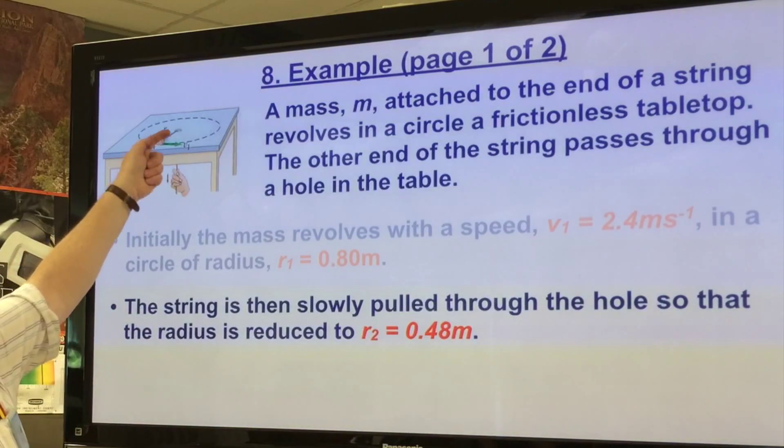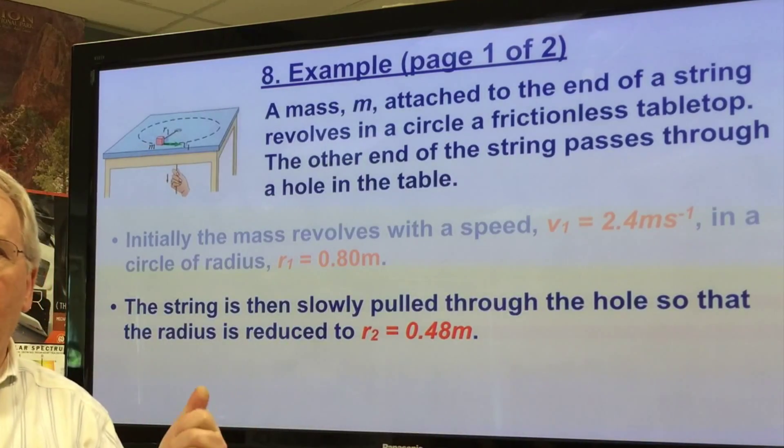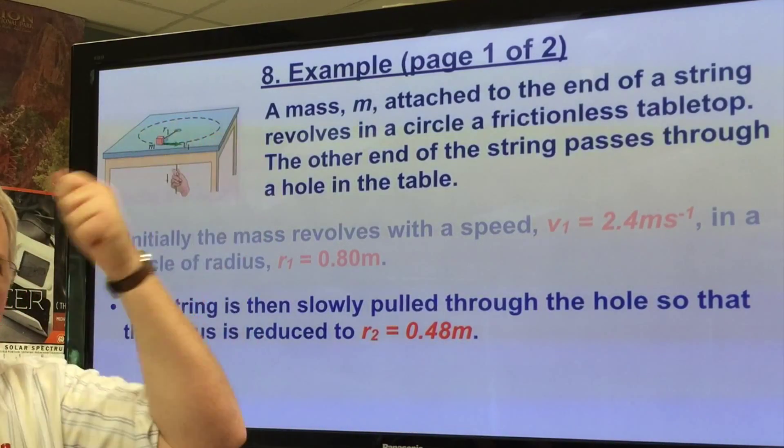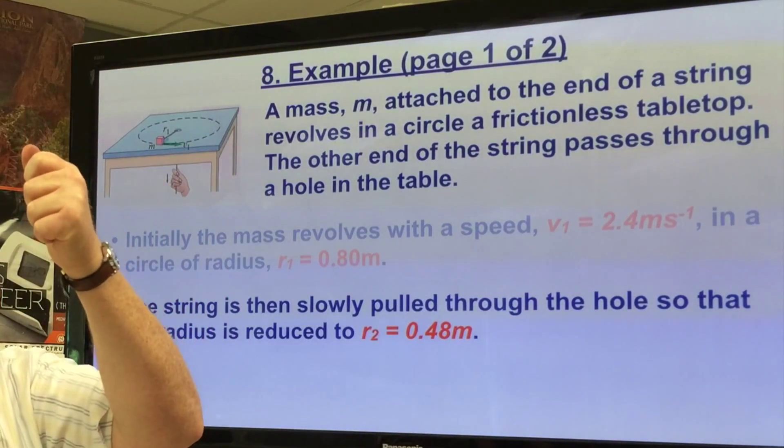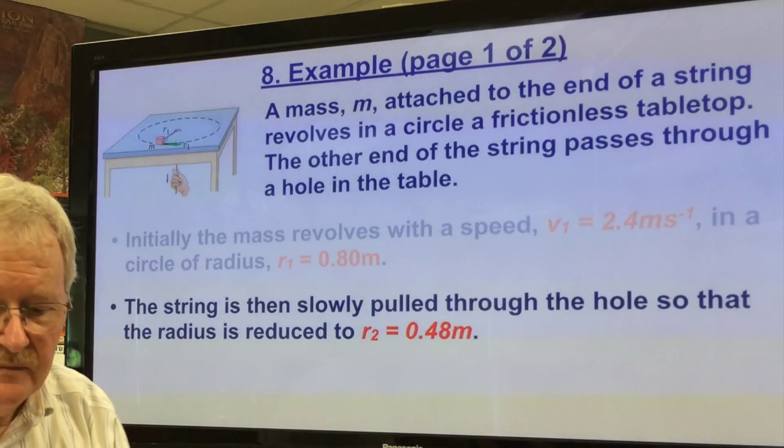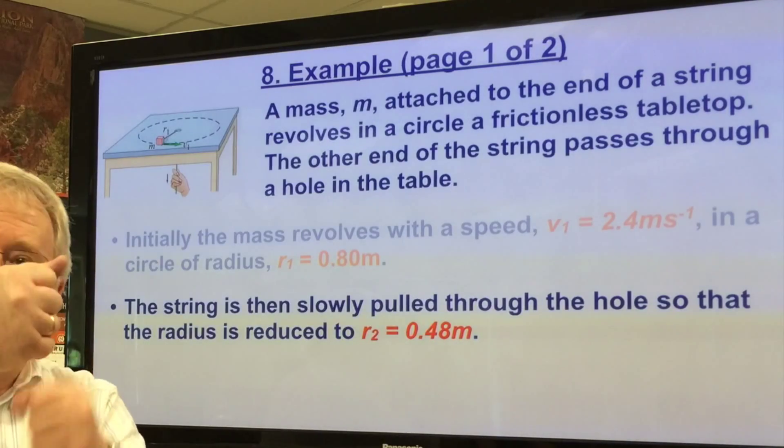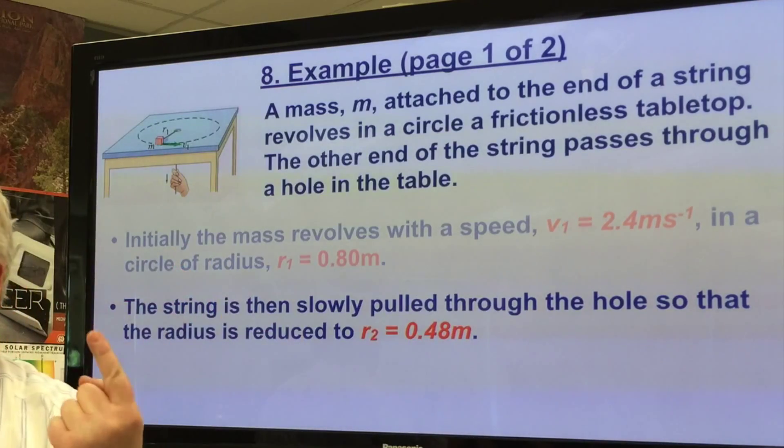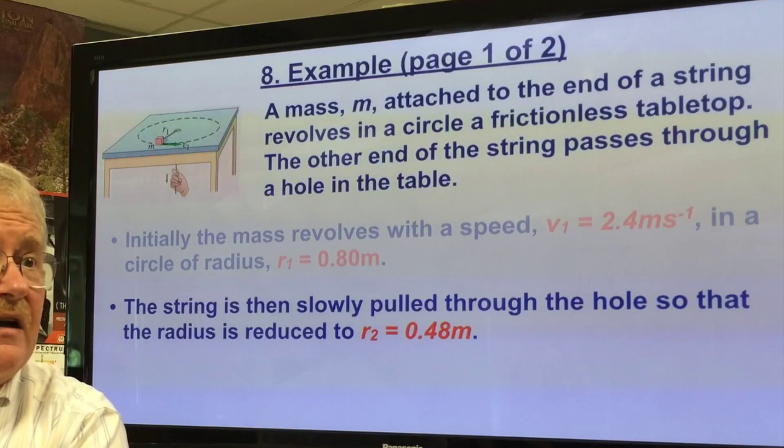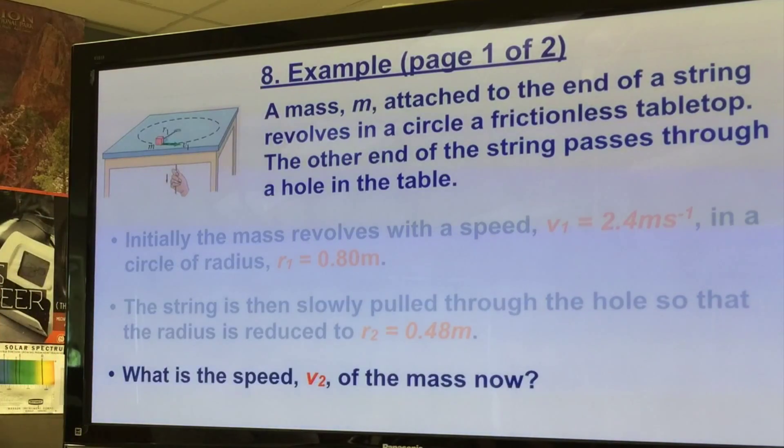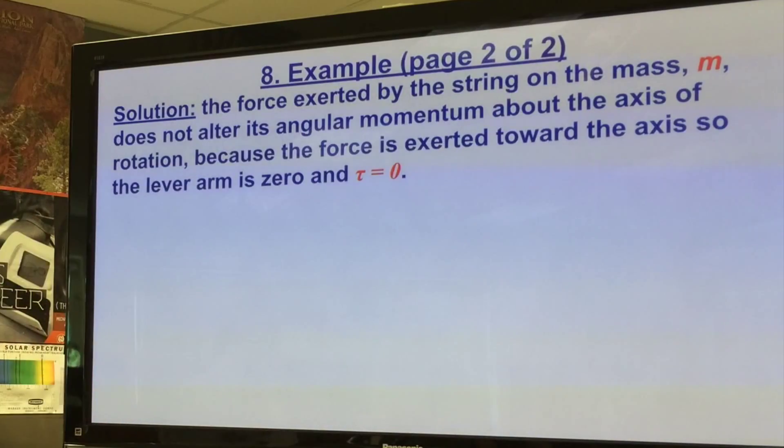The string is then slowly pulled through the hole so that the radius is reduced to r2 equals 0.48 meters. So now this same thing with no friction on it, it's pulled, the radius is made shorter. What did you find happened when you did that with that rubber stopper that you were rotating around? But what you'll see is that as you pull the string in, it gets faster and faster and faster, just like Mercury moves very fast around the sun and the Earth moves less fast around the sun.